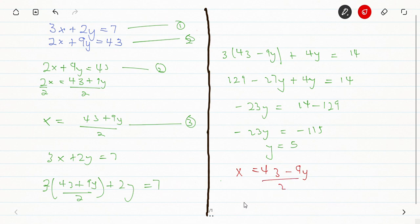So anywhere I see y, I'm going to put 5. So I'm going to get x equals 43 minus 9 bracket 5, all over 2. Then I'm going to get x equals 43 minus 45 all over 2.